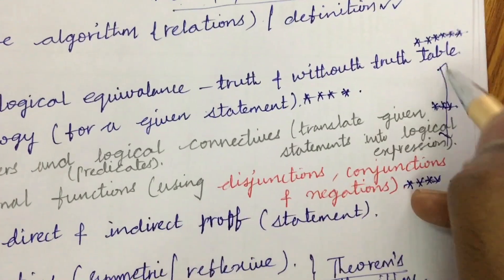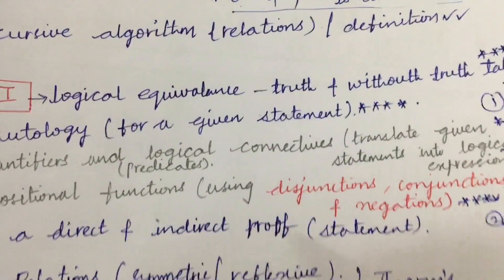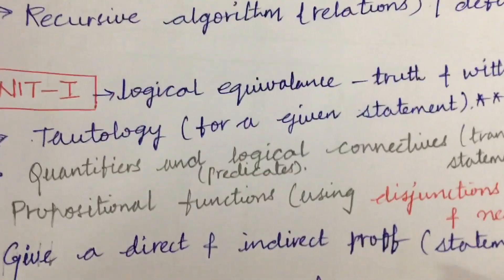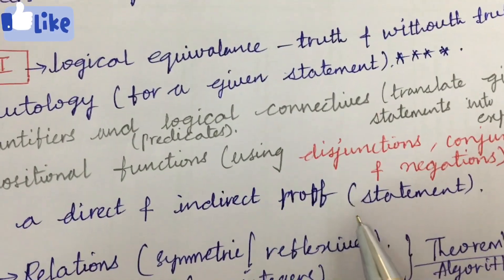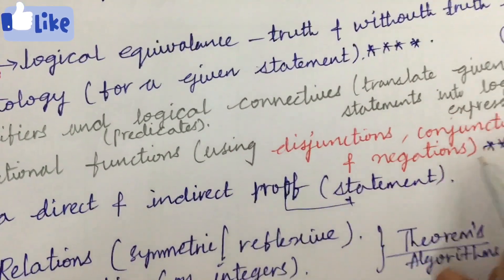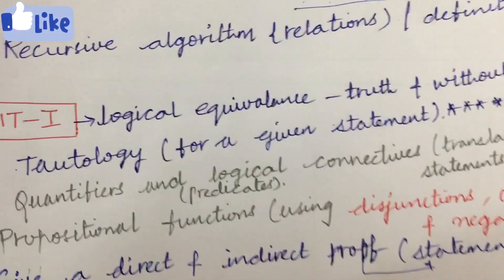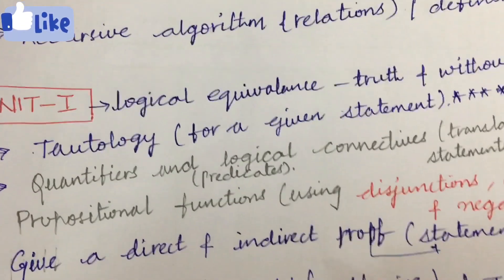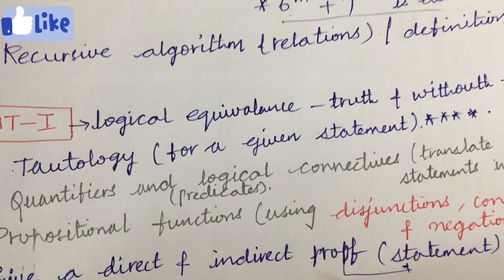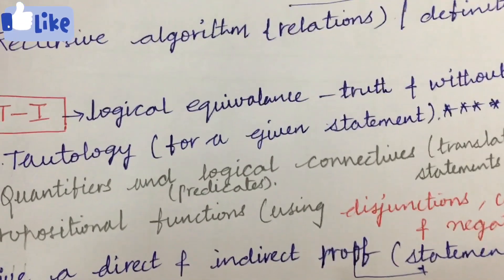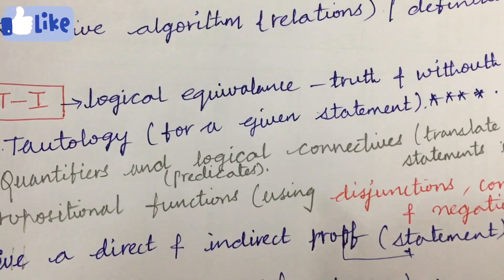From this part you will be getting one question for sure, and from the remaining part you are going to get the second question. Direct and indirect proofs for a given statement — proof problems — are very, very important and will be coming for sure. This analysis is based on previous year question papers as well as the JNTUH syllabus.